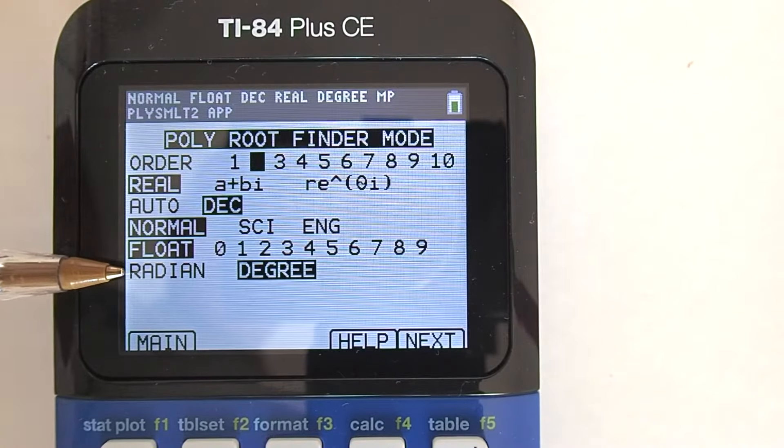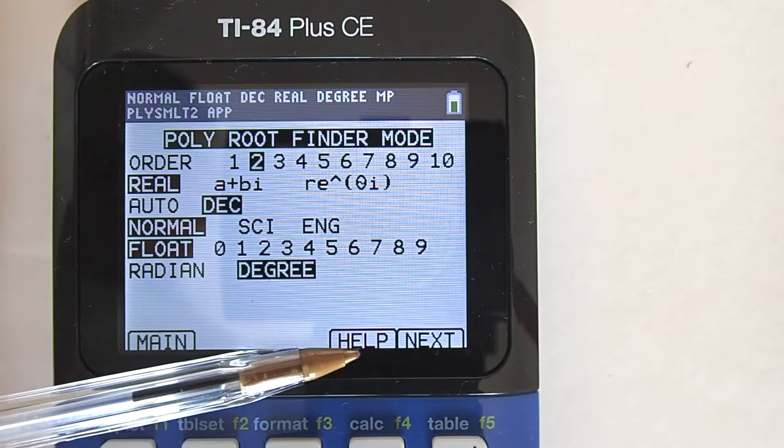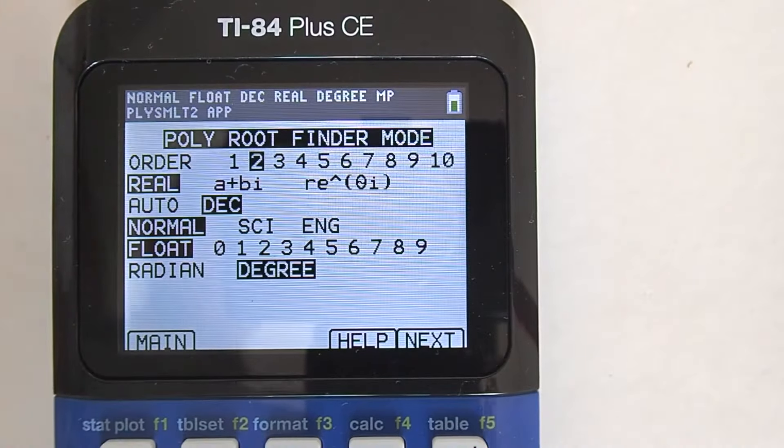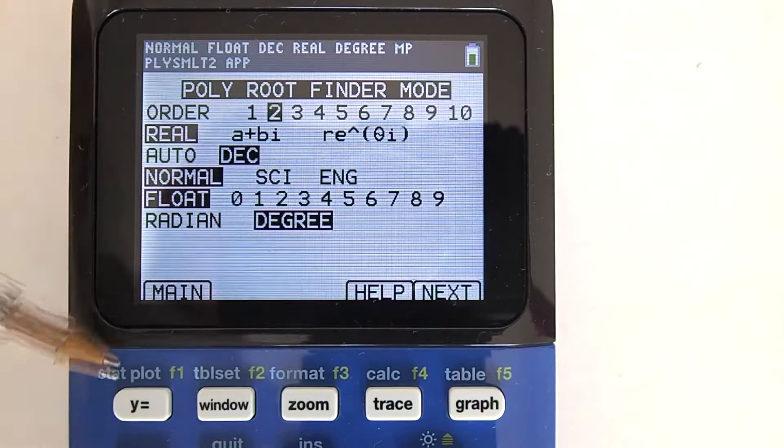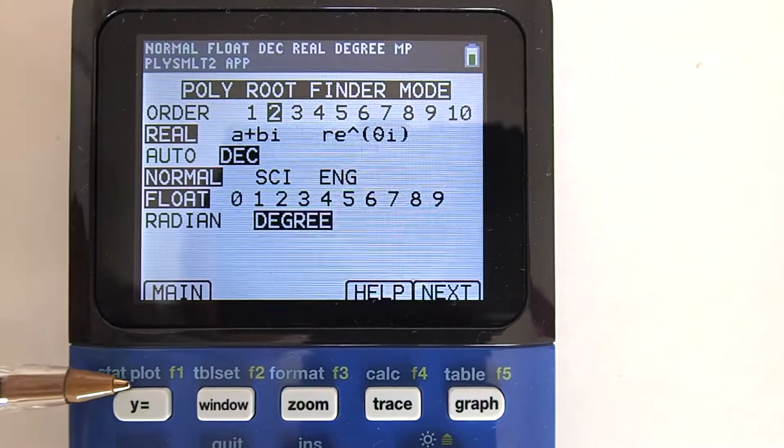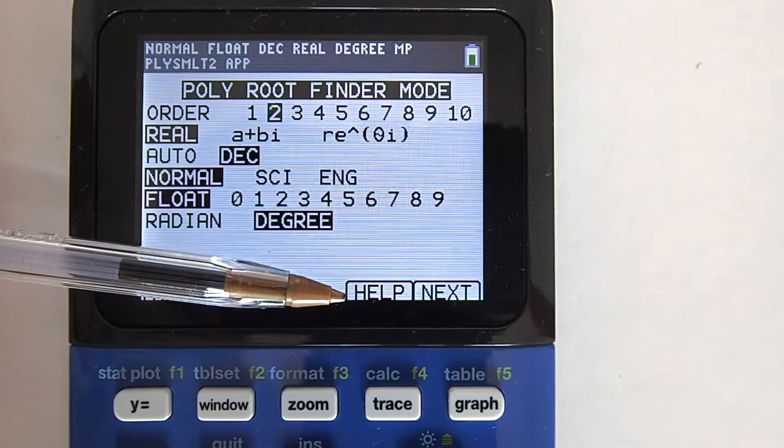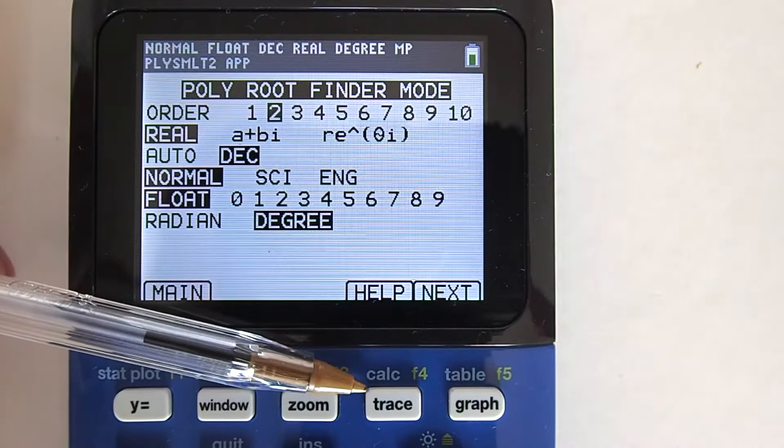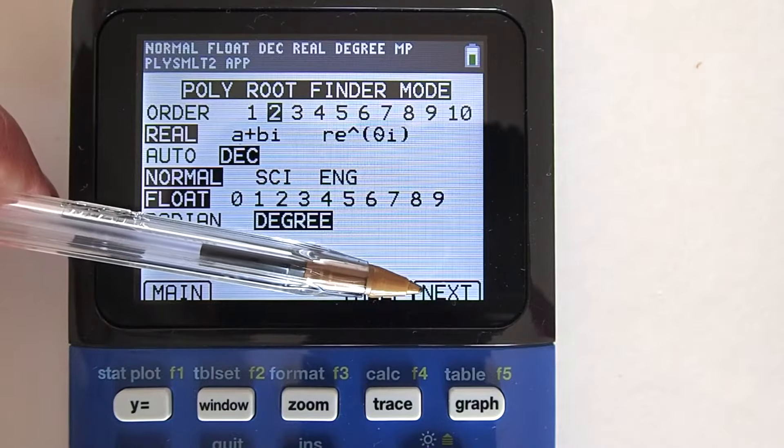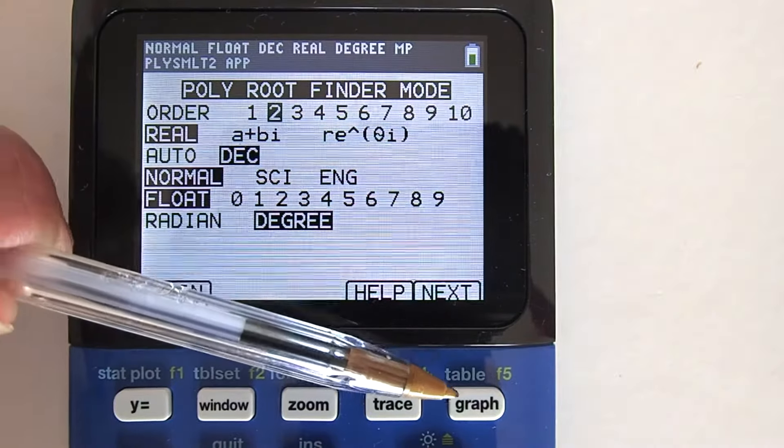On the bottom of the window, you see these rectangular buttons or tabs, main, help, next. To access these buttons or tabs, they correspond to the keys below in the first row. Thus, this main tab corresponds to this y equals key here. And this help tab corresponds to this trace key here. And the next tab corresponds to this graph key here.